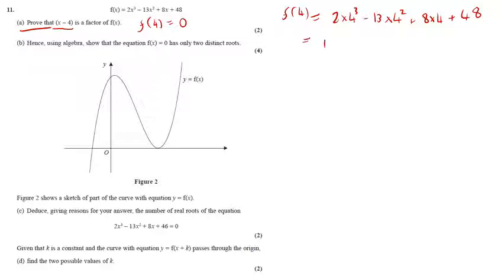Evaluating this now is 128 minus 208 plus 32 plus 48. This equals 0. So now I'm just going to write f of 4 equals 0. Therefore, x minus 4 is a factor.